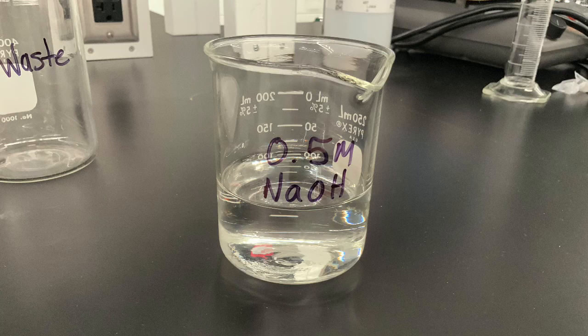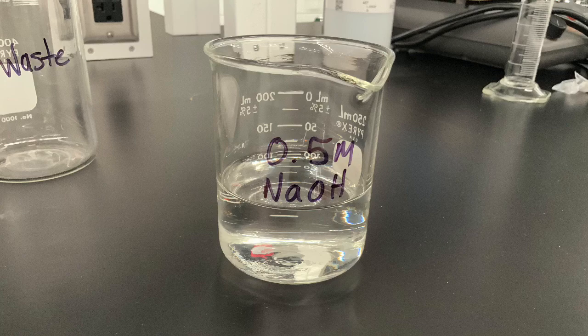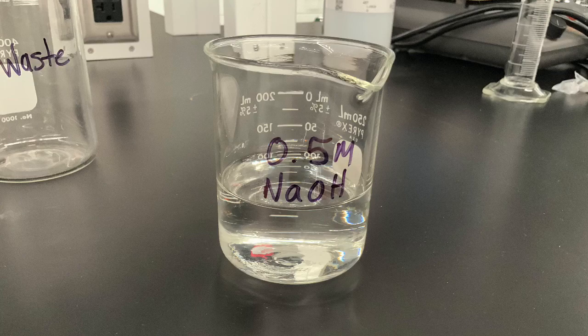In this lab, we will neutralize acetic acid in a vinegar sample with 0.5 molar sodium hydroxide solution. We will add the sodium hydroxide solution from a burette into an exact volume of vinegar solution.